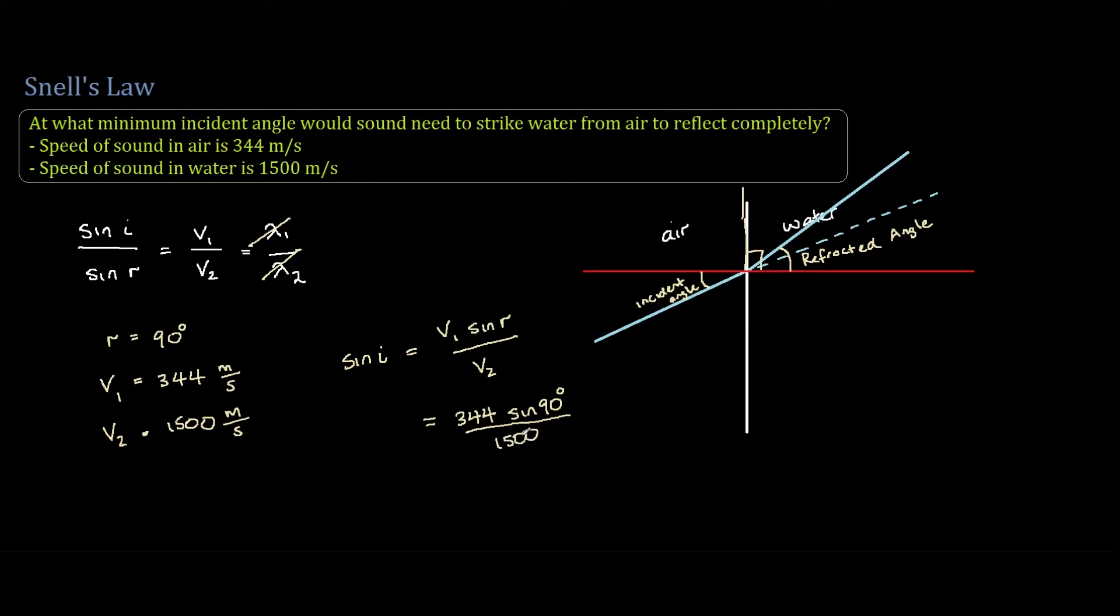And this comes out to be 0.0229. So if you take the inverse of sin, this would give you our incident angle, our minimum incident angle, which is what the question is asking for. It comes out to 13.3 degrees.